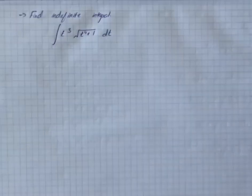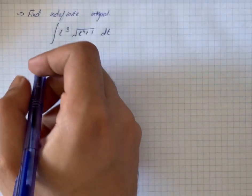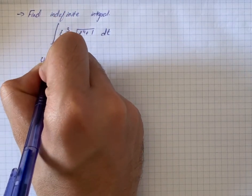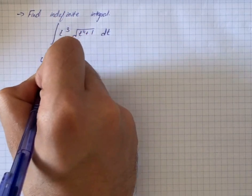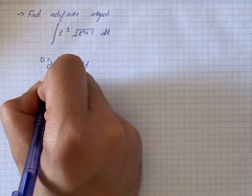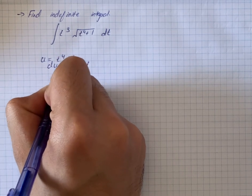Here we have to find the indefinite integral. So first of all, we will apply the substitution method. We have u is equal to t⁴ plus 1, du is equal to 4t³ into dt. Then we have du by 4 is equal to t³ into dt.